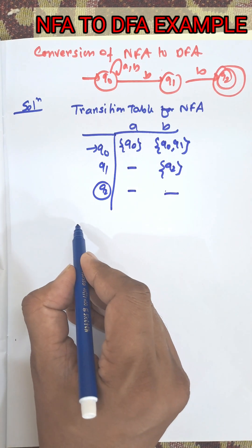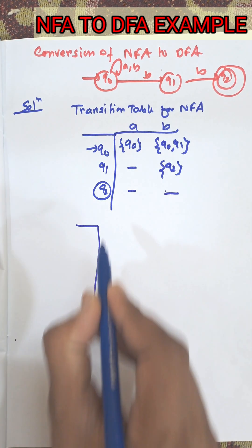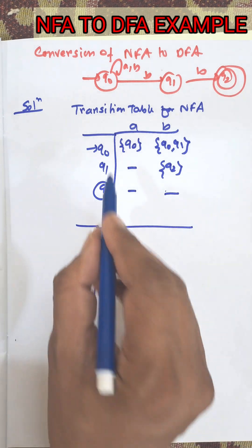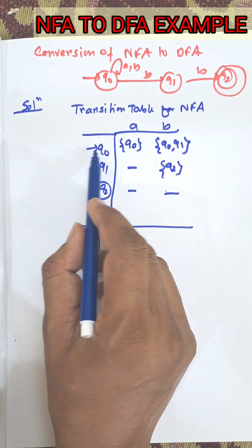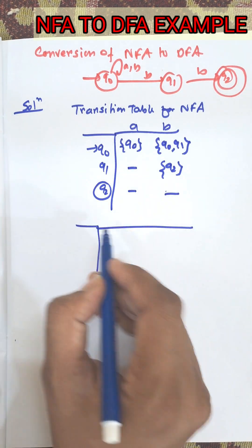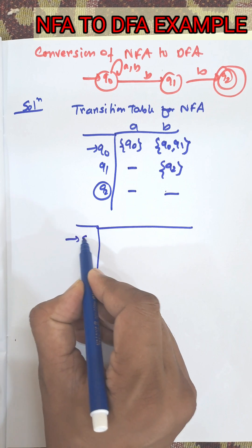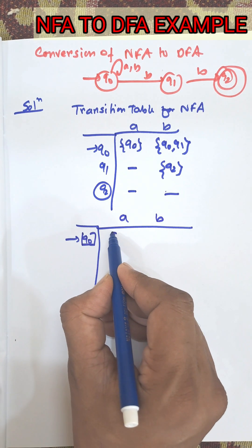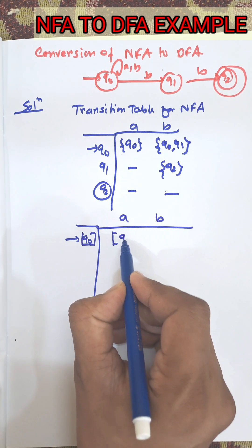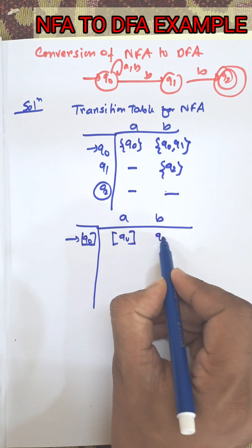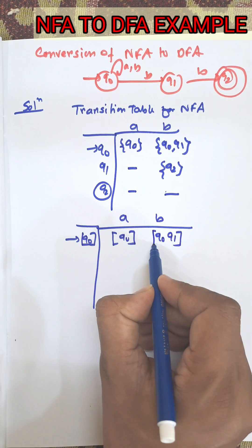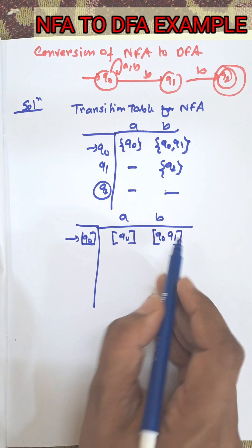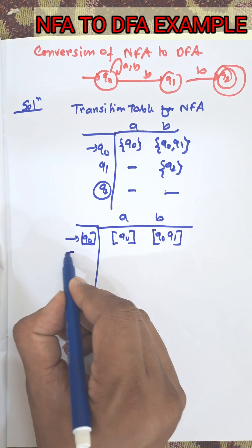Now we need to draw the transition table for DFA. First of all we will consider the initial state only on the NFA transition table. So this is the initial state with inputs A and B. We will consider the initial state only — no need to consider other rows. Now this new output state we will consider as an input of the DFA.